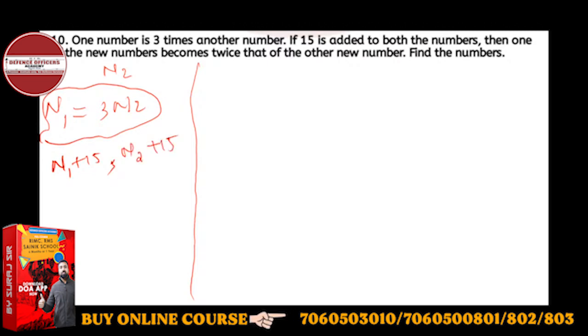The twice concept applies to the larger number. The larger number is n1, which is thrice of n2. So one of the new numbers, n1 plus 15, will become twice the other new number, which is twice into n2 plus 15. So we get two equations.